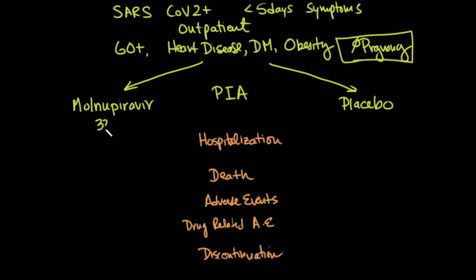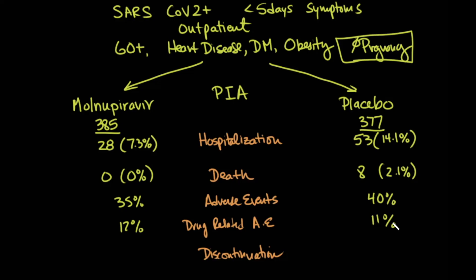And when they did that, they found that there were 385 subjects in the Molnupiravir group and 377 in the placebo group. And when they looked at the analysis, they found that 28 patients have been hospitalized, or about 7.3%, and in the placebo group, 53 have been hospitalized, or 14.1%. There were no deaths in the intervention group and eight deaths in the placebo group. The incidence of any adverse events was 35% and 40%, respectively. The incidence of drug-related adverse events was 12% and 11%, respectively. And the discontinuation of this study medication in the first group, the Molnupiravir group, was 1.3%, and in the placebo group, discontinuation was 3.4%.